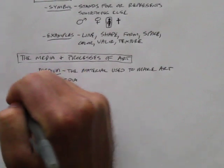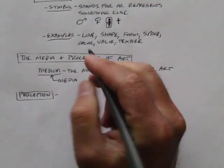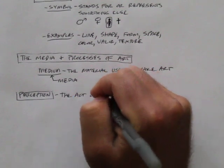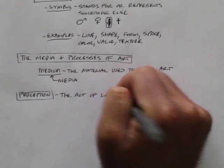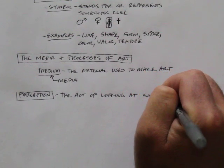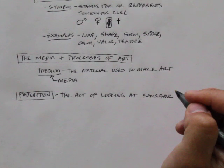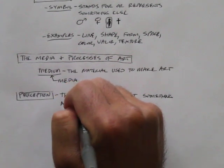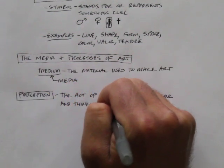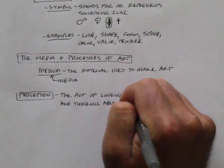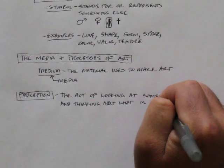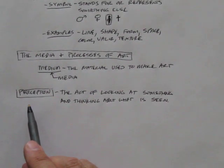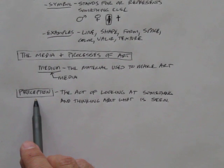And this is a pretty important part of art. This is the act of looking at something and thinking about what is seen. So anytime you look at a painting or a picture or a drawing, whatever, you have a certain perception of that piece of art.